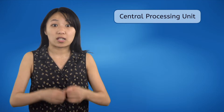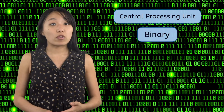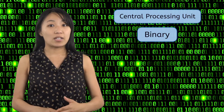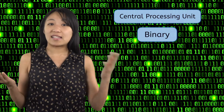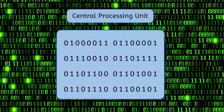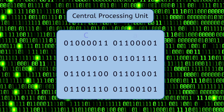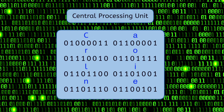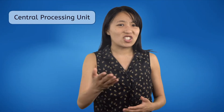Everything the computer does is just a complicated calculation. Computers perform mathematical calculations in strings of code we call binary, represented by ones and zeros, and those codes tell them what to do. For instance, this looks like math, but to a computer it says a name — Caroline. It may not make sense to you, but binary is the only thing that makes sense to a computer. And clearly it works, because everything you do on a computer is made up of binary calculations.